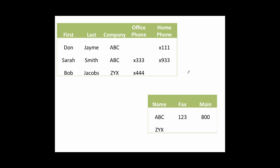Here's our revised system. We still have our first table — our person table with Don, Sarah, and Bob — and the information that is about each person. Especially important is we still have this company field, which is now something we call a foreign key. It refers to information about Don, saying Don works at ABC, but also gives us a pointer or bookmark to go to a different table. In that new table, the column name values match what we have in the person table. In this new table, this is something called a primary key, or PK for short. Over in the person table's company column, it's called a foreign key, or FK for short.